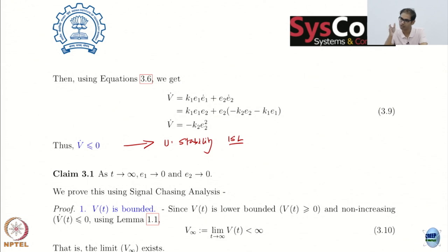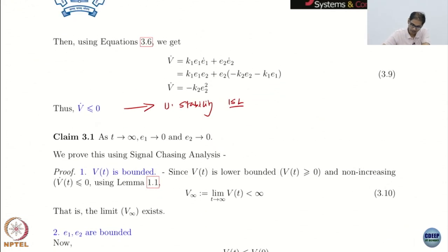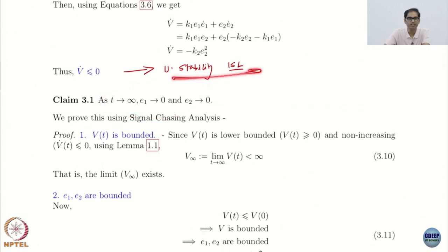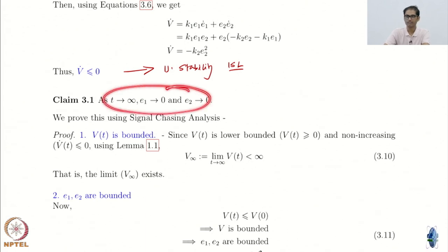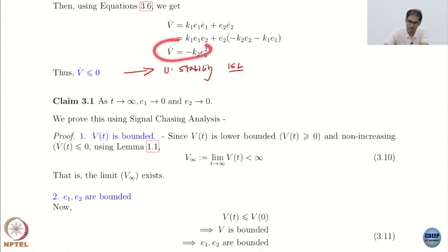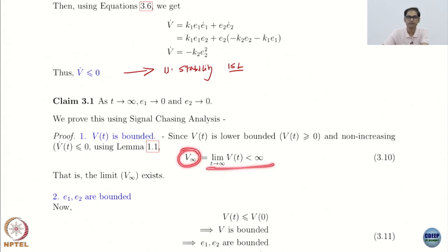Remember the term: signal chasing analysis. The steps are very standard — almost like memorizing steps 1, 2, 3. We have already proved stability, so we only need to prove convergence. Asymptotic stability is stability plus convergence. Step 1: V is lower bounded (≥ 0) and non-increasing (V_dot ≤ 0). By the first lemma, V_∞ exists and is finite.